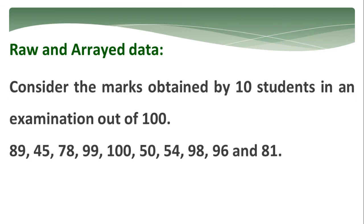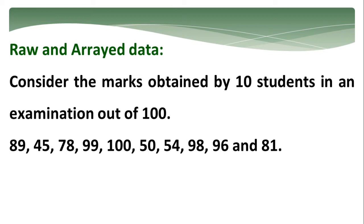The next topic is raw and arrayed data. There are a few certain words, new words, which we have to come across and we should know the meaning of that. Raw or arrayed data. What is this raw data? Let me explain with an example. Consider the marks obtained by 10 students in an examination out of 100. You can just note down the marks. This is called as data, raw data. That means, how data is collected, it is kept as it is. It is called as raw data.